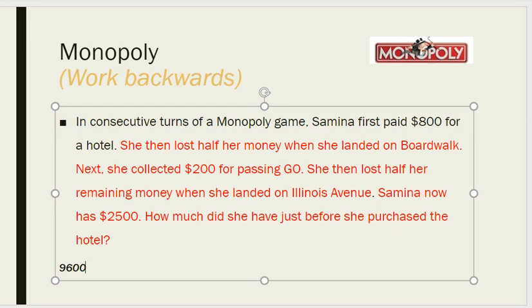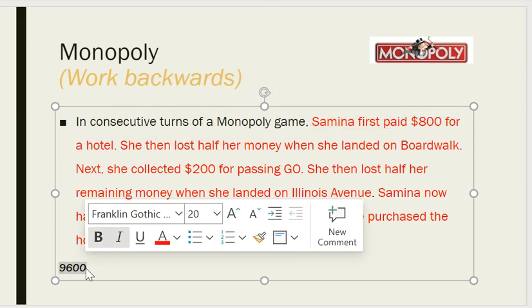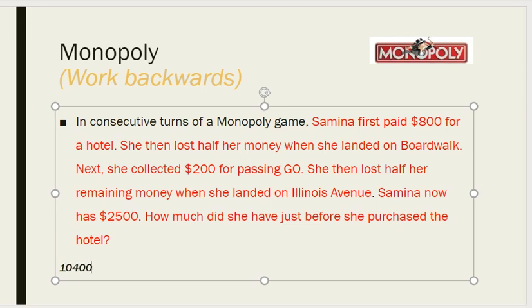You get 4800 from 9600 after losing half. That gives us 2500 at the end. Now, Saminah first paid 800 rupees for the hotel. Since she paid it out, going backwards means we add it back: 9600 plus 800 equals 10,400. This is the amount she had with her at the start — 10,400.